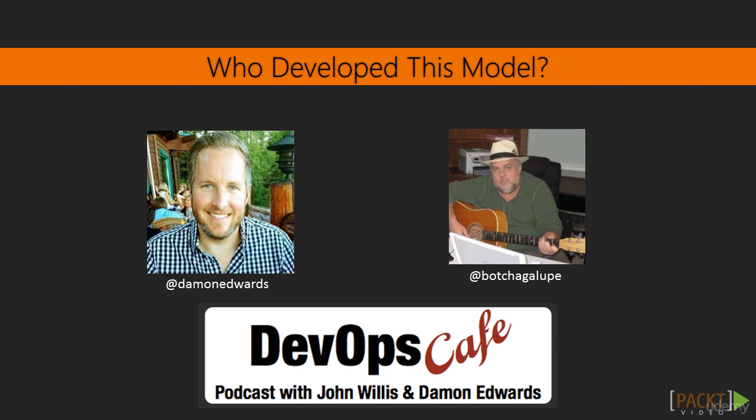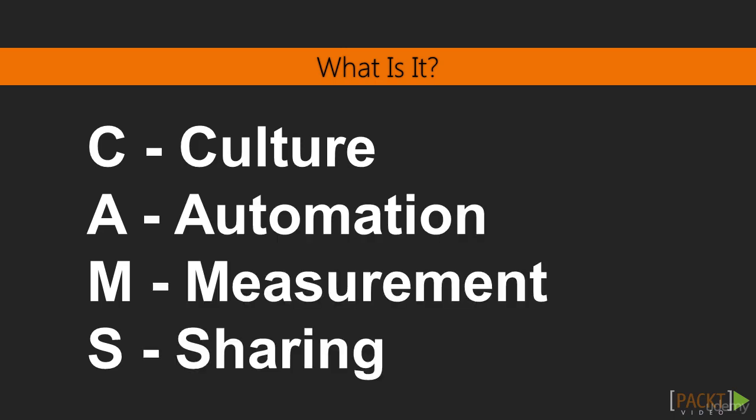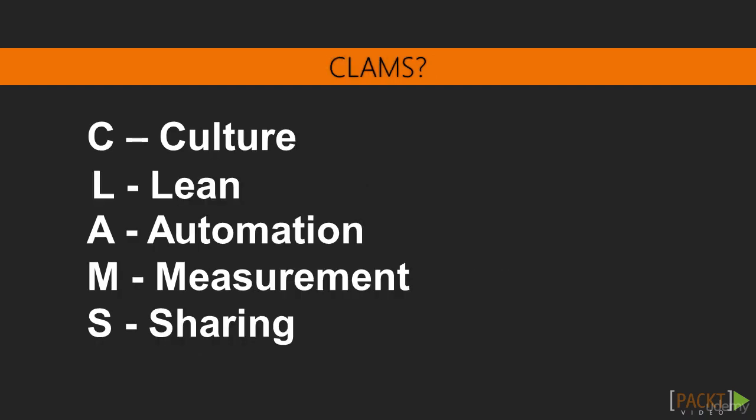For example, if I want to go fast, what are the practices that enable that? So they came up with CAMS: culture, automation, measurement, and sharing. There was an idea that they might actually call it CLAMS and put an L in for lean. We talked about lean when we discussed Toyota manufacturing, and we already know that many parts of DevOps borrow heavily from lean. But ultimately they left it out and went with culture as the C in CAMS.